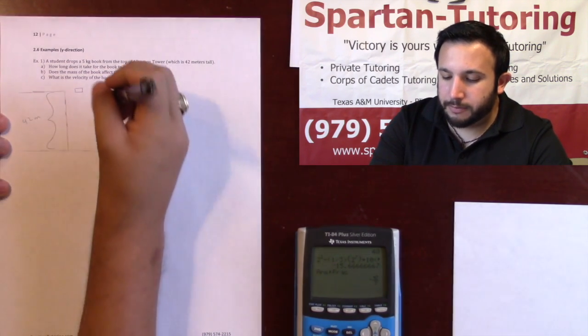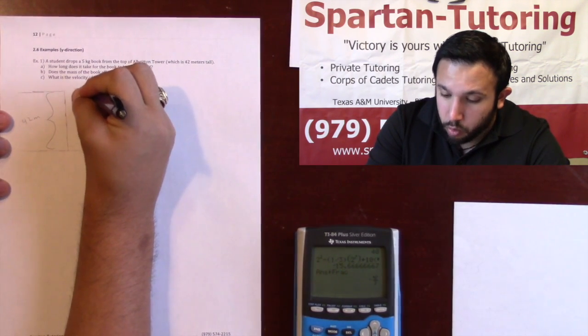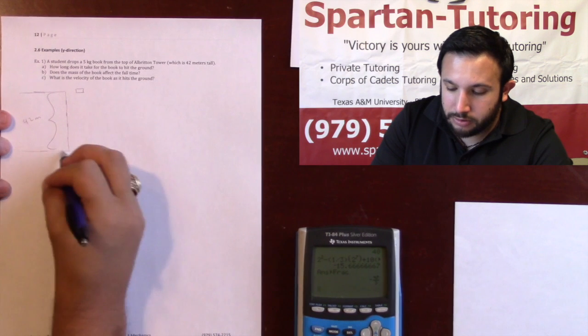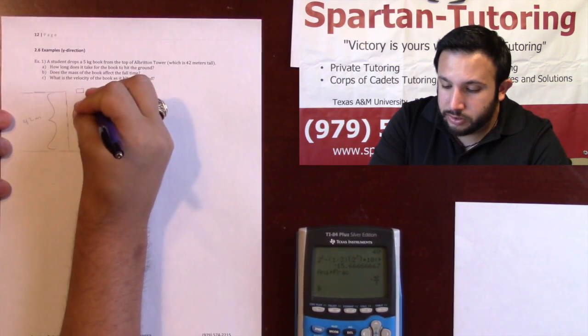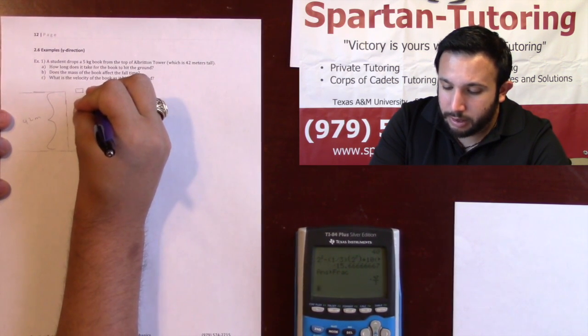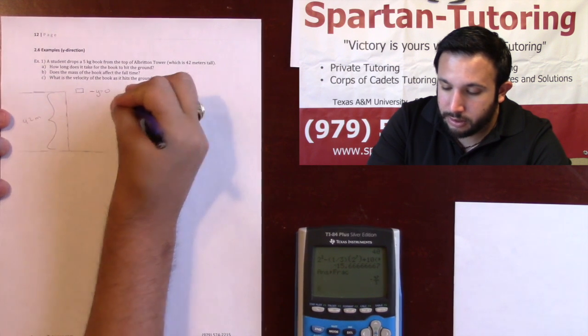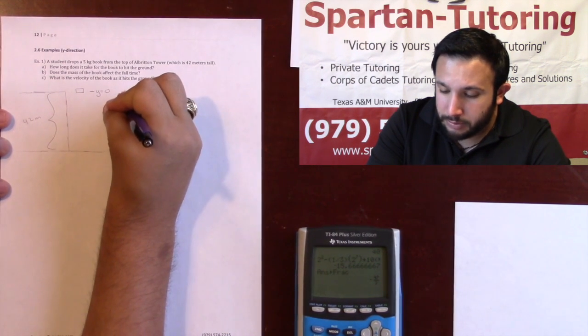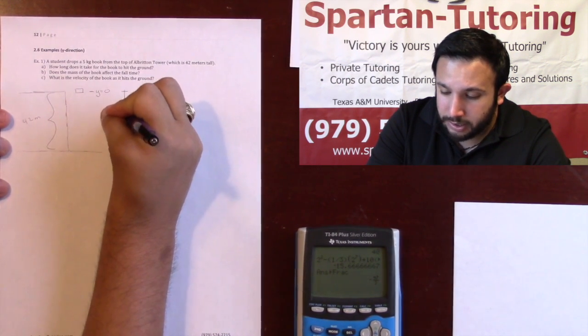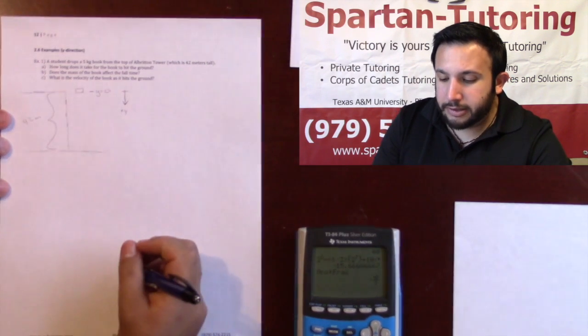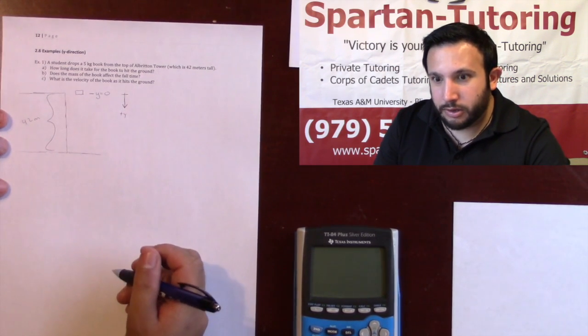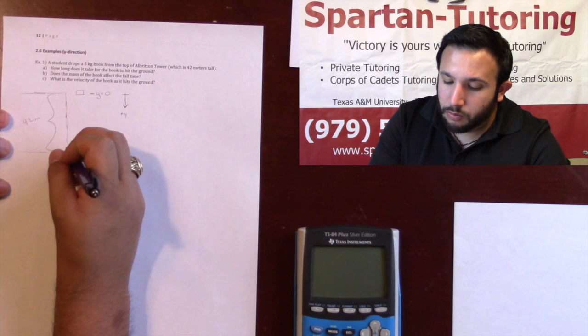What I'm going to do in this problem is I'm going to call where the book starts, here's Albritton Tower, here's the floor, I'm going to start right here, I'm going to call this y equals zero, and I'm going to say that the positive y direction is downward.